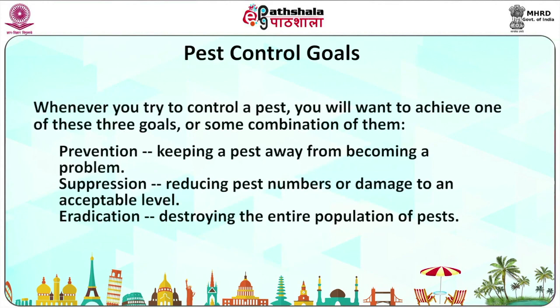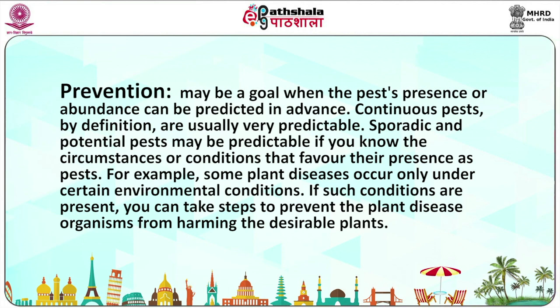The goals of the pest management control program include pest control goals. Whenever you try to control a pest, you will want to achieve one of these three goals or some combination of them. The first one is prevention — keeping the pest from becoming a problem. Two is suppression — reducing pest numbers or damage to an acceptable level. Third, eradication — destroying the entire population of pests. Prevention may be a goal when the pest's presence or abundance can be predicted in advance. Continuous pests are usually very predictable. Sporadic and potential pests may be predictable if you know the conditions that favor their presence.